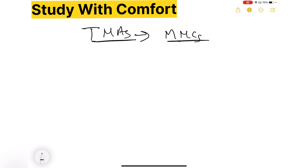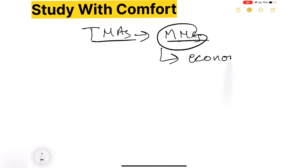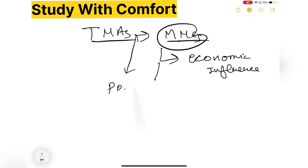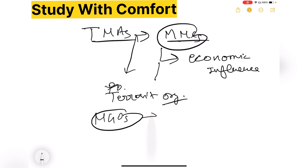Examples की बात करें तो — MNCs यानी multinational corporations economic domain पर operate करते हैं, इनका trade, investment और economic policies पर influence होता है। Terrorist groups security challenges create करते हैं। NGOs — non-governmental organizations — policy influence create करते हैं, partnership और capacity building का काम करते हैं।